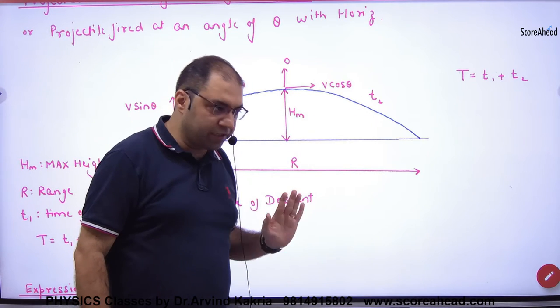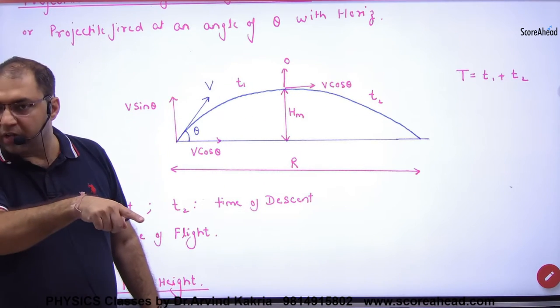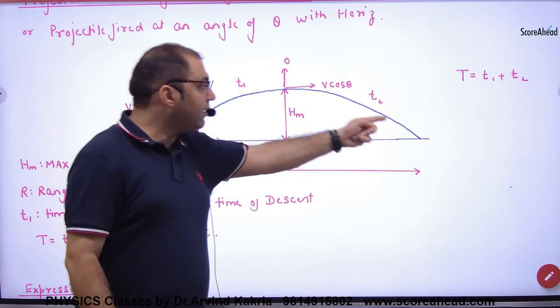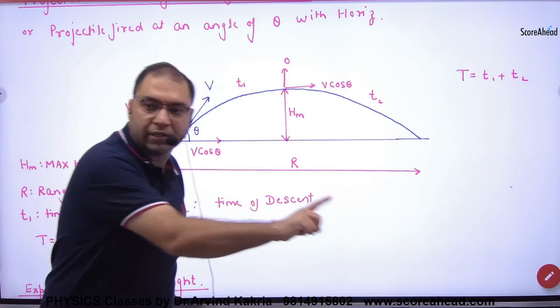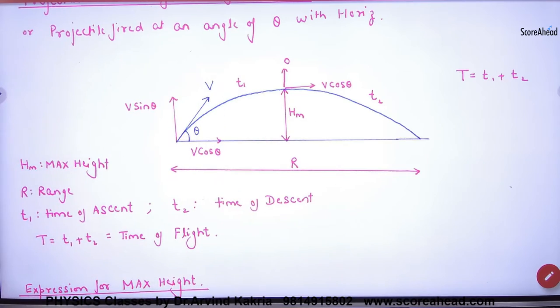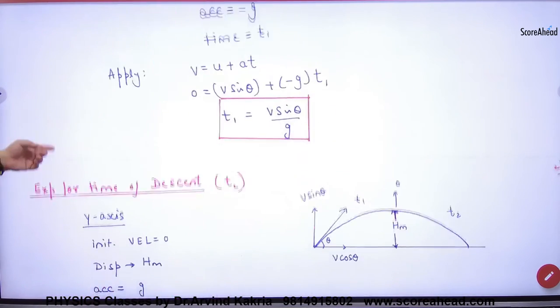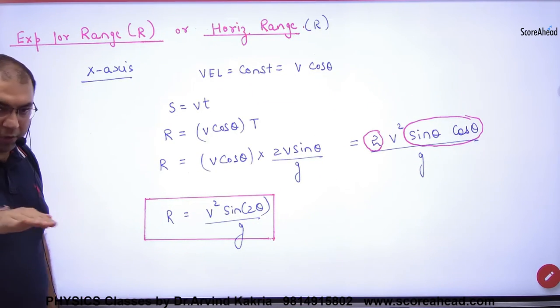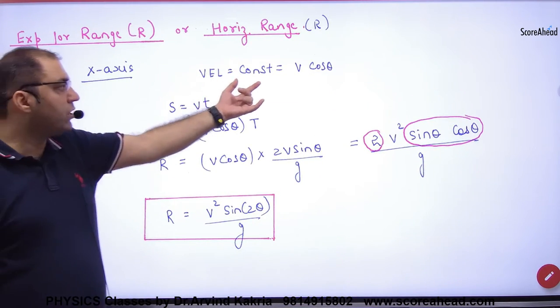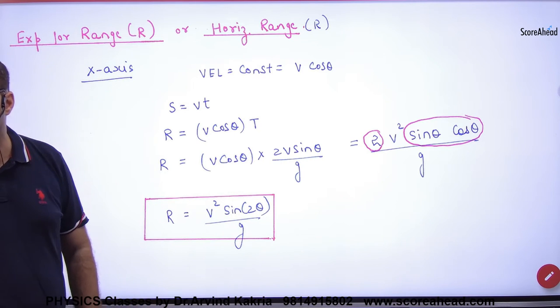vcos theta, so R distance covered, how much time? Time of flight, capital T. So if I have a range of R, then in x-axis what equation will be? Velocity constant, how much? vcos theta.